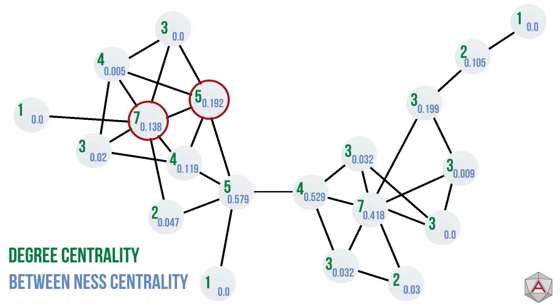These nodes, for example, have a high degree centrality score, but a relatively low betweenness score. We know that these are highly visible nodes, but they don't hold a unique role in the network.